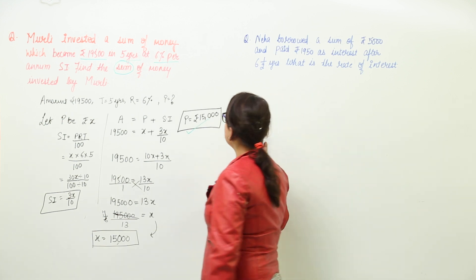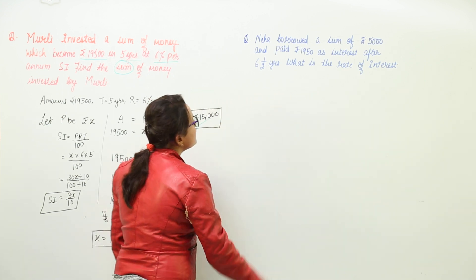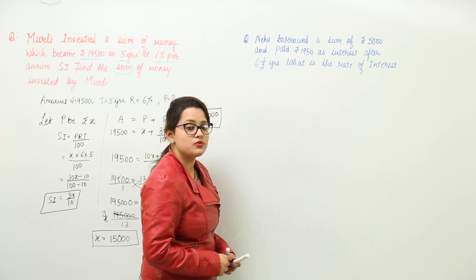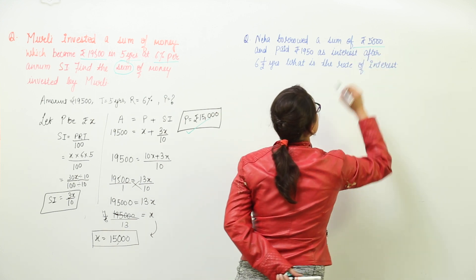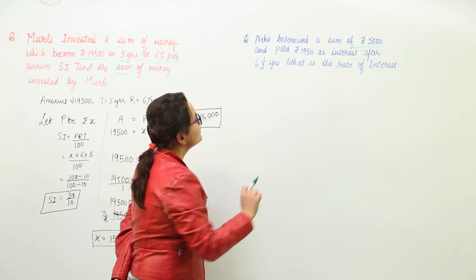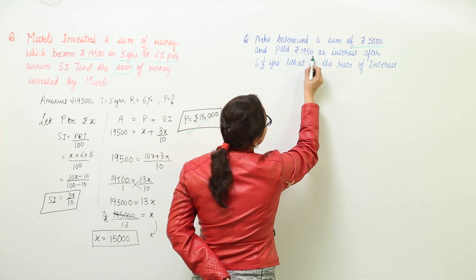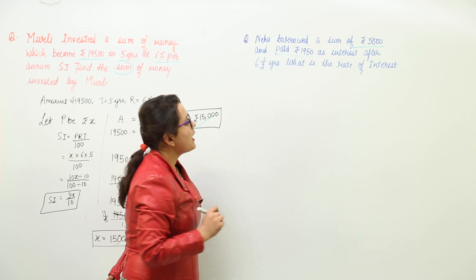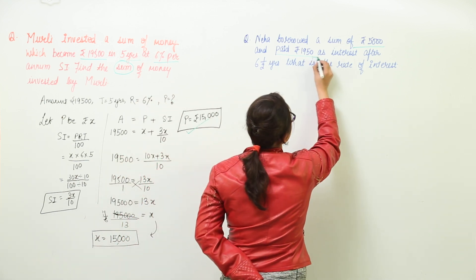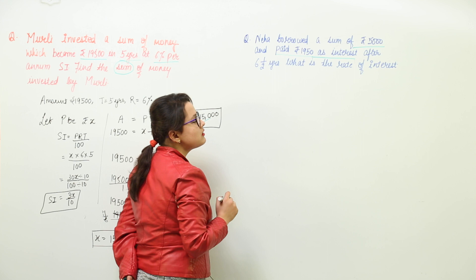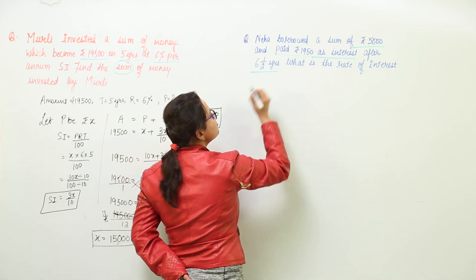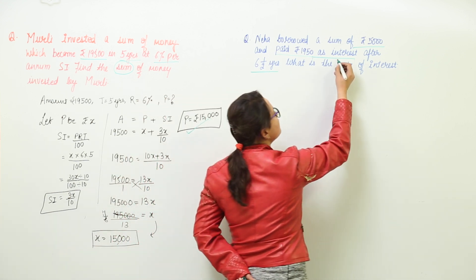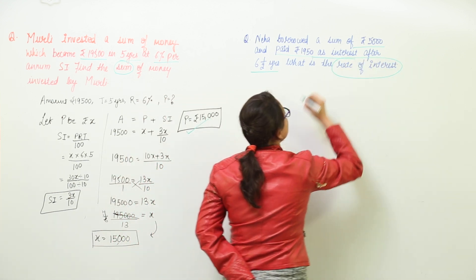Now let us move on to the second question over here where we are asking that Neha has borrowed a sum of rupees 5,000. Now the 5,000 rupees is the sum that is the principle given to us. Next is that she is going to pay rupees 1950 and as interest. So this means this is the interest paid by her after 6 and a half years. 6 and a half years is my time period. So what am I supposed to find out? The last remaining part that is the rate of interest.